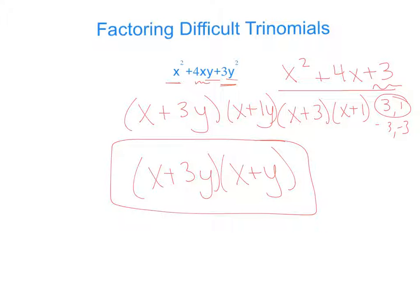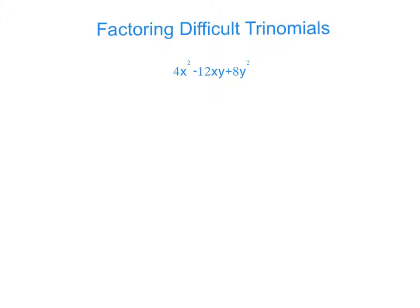Now, we have another example here. If we look at this problem, we notice that each of these are divisible by 4. So we're going to do the greatest common factor first. If we factor out a 4, we're left with x squared minus 3xy plus 2y squared.